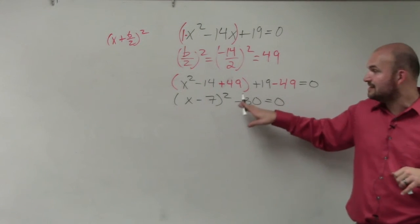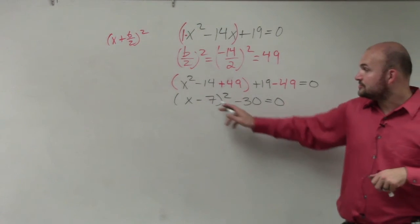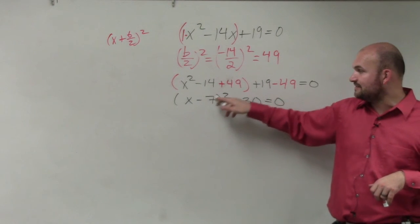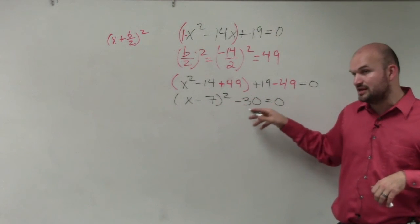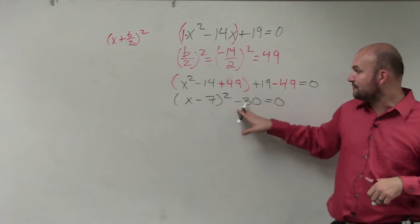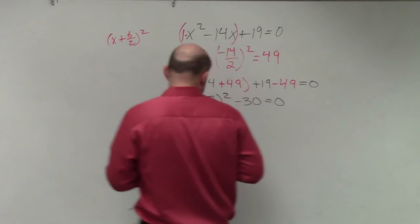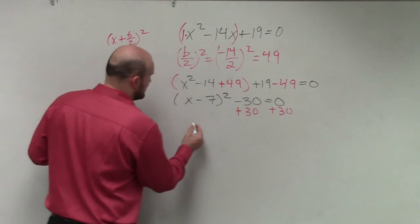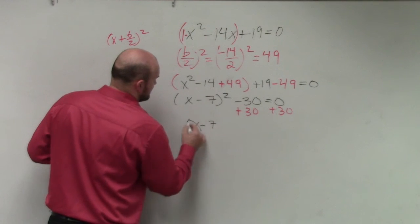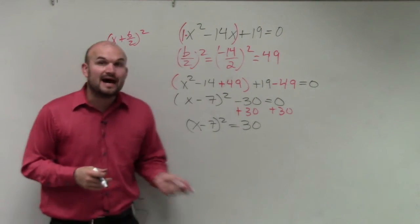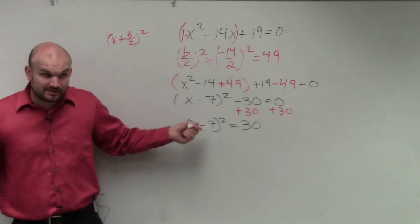What we're simply practicing in this case is solving for x. So you can see my variable x is being subtracted by 7. It's being squared. And then it's being subtracted by 30. So this term is being squared. So the first thing we're going to undo is subtracting by 30. So I'm going to add 30 to both sides. So therefore, I have x minus 7 squared equals positive 30.